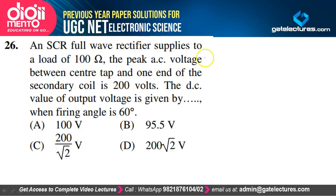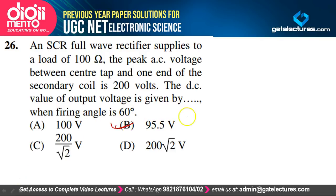The SCR full-wave rectifier supplies a 100 Ω load. Peak AC voltage between center tap and secondary end is 200 V. The DC output voltage when firing angle is 60° — option B is the correct answer.